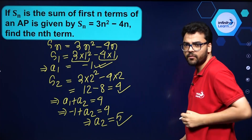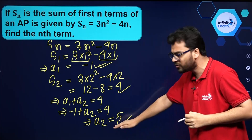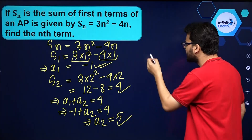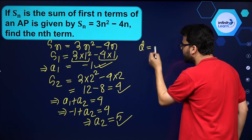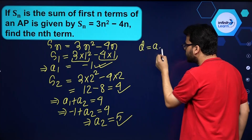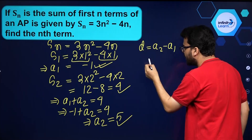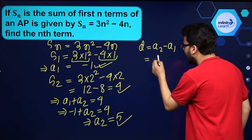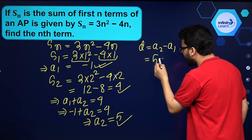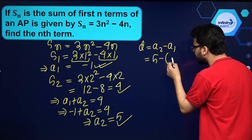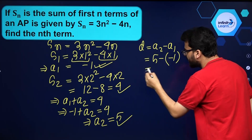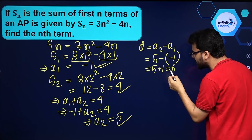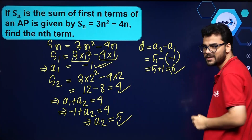Now we know the first term and the second term. Can we find the common difference? The common difference is nothing but a2 minus a1. And a2 is 5 and a1 is minus 1. So the common difference comes out to be 5 plus 1, which is equal to 6.